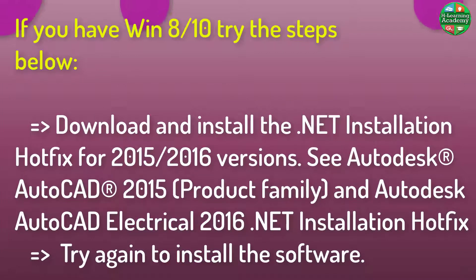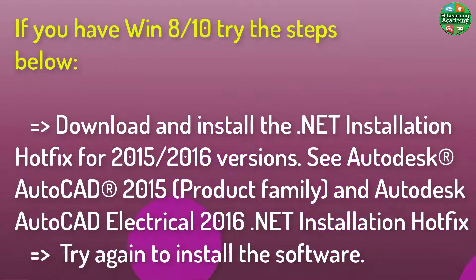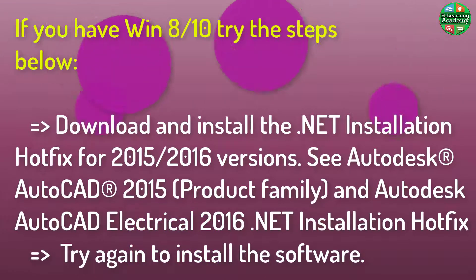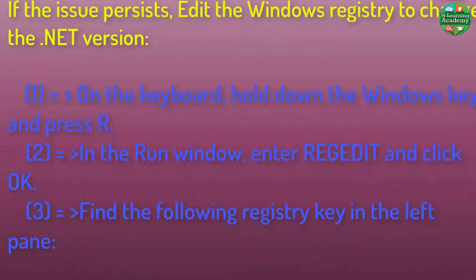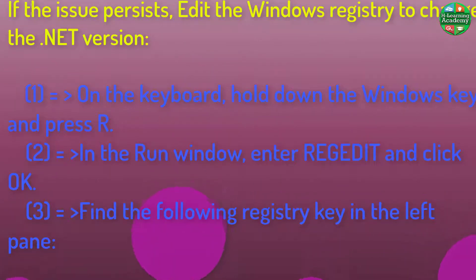If you have Windows 8 or Windows 10, try the steps below. Step 1: Download and install the .NET Installation Hotfix for 2015–2016 versions — see the Autodesk AutoCAD 2015 Product Family and Autodesk AutoCAD Electrical 2016 .NET Installation Hotfix. Step 2: Try again to install the software. If the issue persists, edit the Windows registry to change the .NET version.